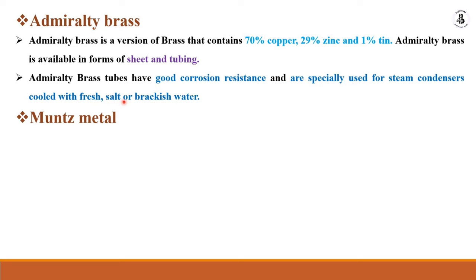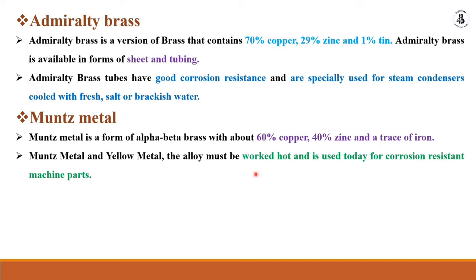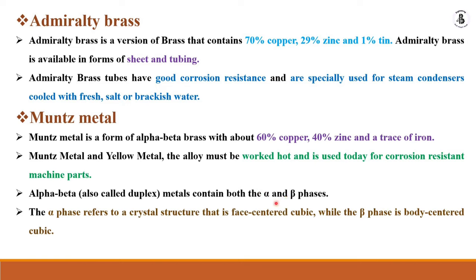Muntz metal is also a brass alloy. Muntz metal is a type of alpha-beta brass with a composition of 60% copper, 40% zinc and a trace of iron. Muntz metal has the property of corrosion resistance and many more. Alpha-beta, or duplex, metals contain both alpha and beta phases. The alpha phase refers to a crystal structure that is face-centred cubic.